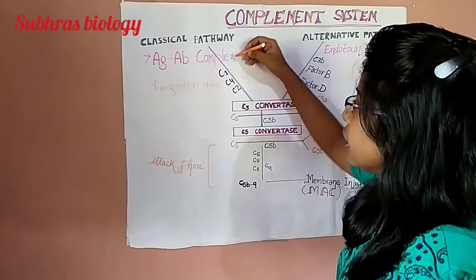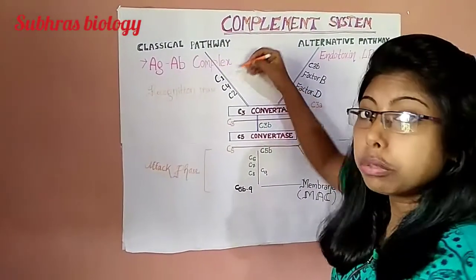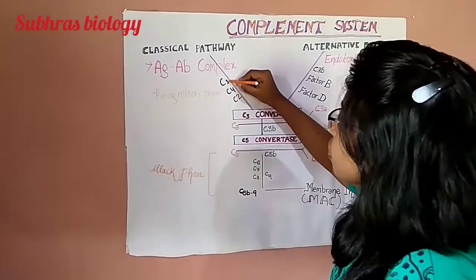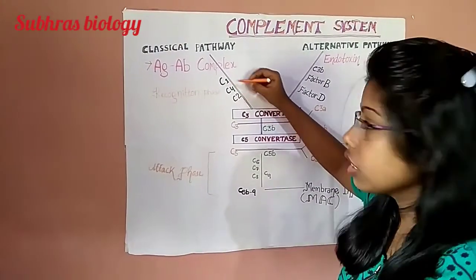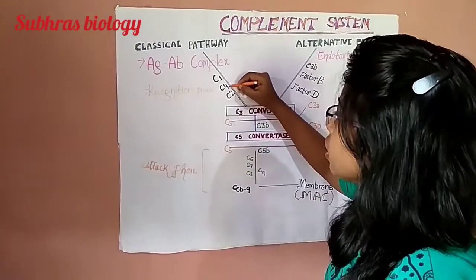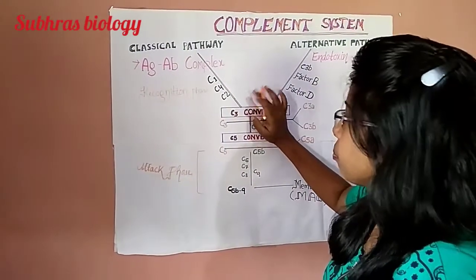Here is the easy step to remember Complement System in 5 minutes. You have to remember only C1, C4, C2. These three numbers you have to remember: C1, C4, C2.